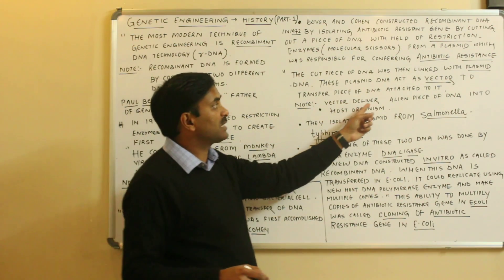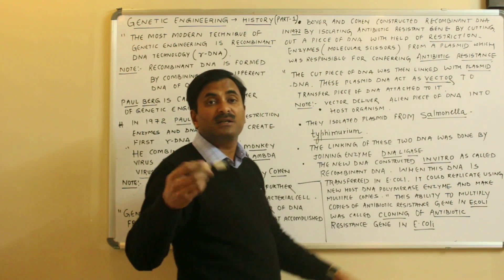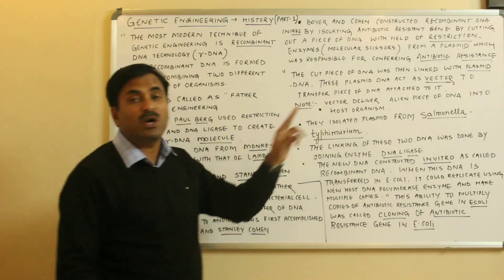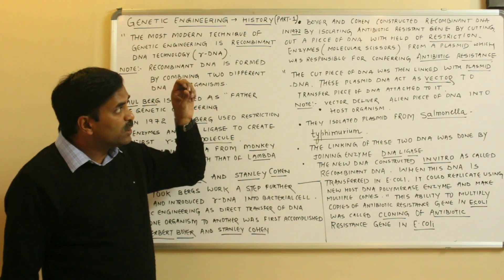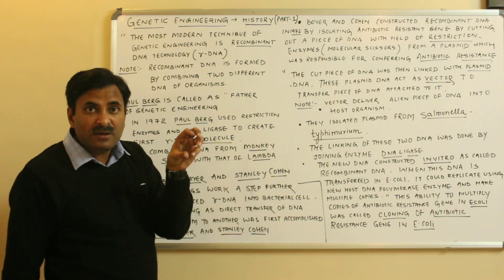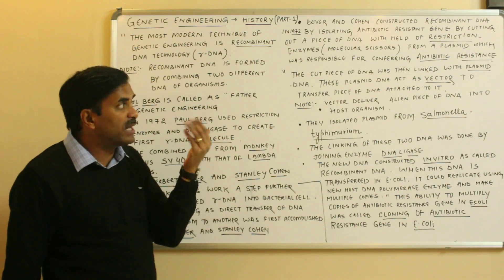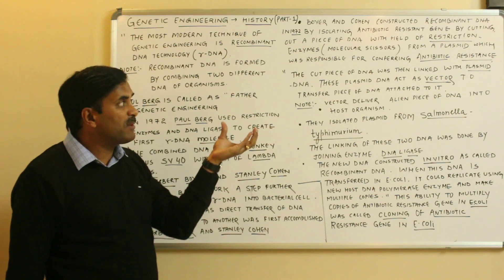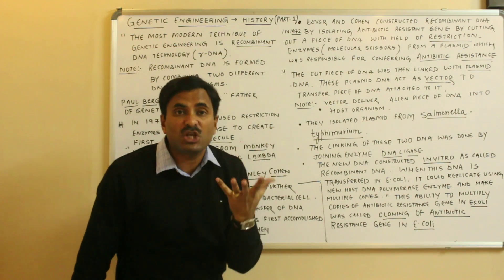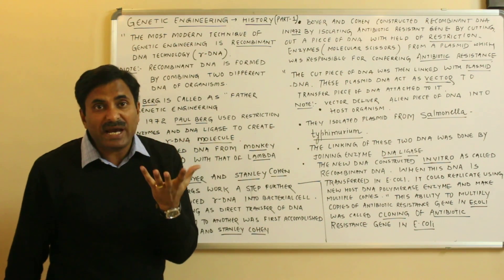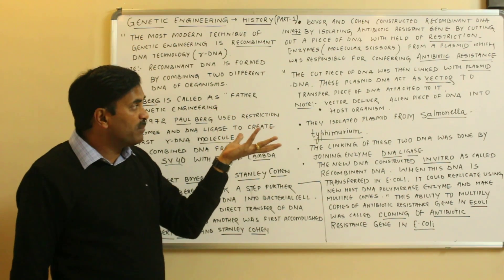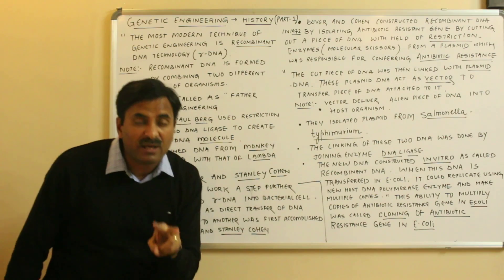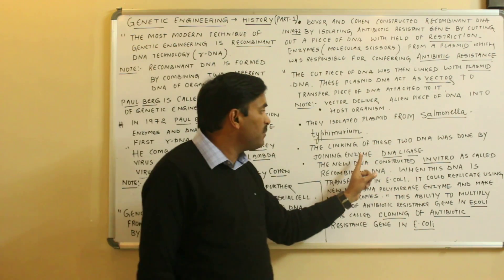A vector delivers an alien — that is, foreign, target, passenger, source, or desired — piece of DNA into the host organism. They took the antibiotic resistant gene isolated from the plasmid and linked it with the vector plasmid. The desired DNA — the cut piece containing the gene of interest — was joined with the plasmid DNA to form a recombinant DNA.